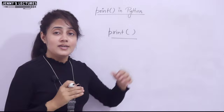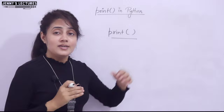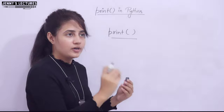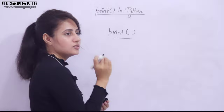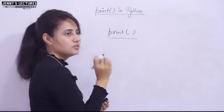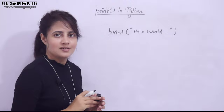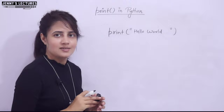In Python you don't need to write any header file, main function, or anything like that. Simply write print(), and within the parentheses put the string or message you want to display. For example, to print Hello World, write print("Hello World") — no semicolon needed. That's it.